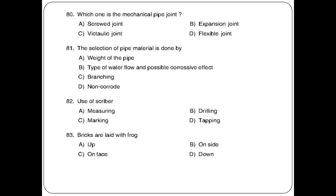Which one is the mechanical pipe joint? Options: screw, expansion, victaulic joint, flexibility joint. The answer is victaulic joint. The selection of pipe material is done based on type of water flow and possible corrosion.